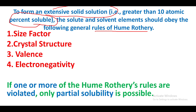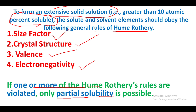For greater than 10 atomic percent solubility, the solute and solvent must obey the Hume-Rothery rules. The four rules are: size factor, crystal structure, valence, and electronegativity. If any one of these rules is not obeyed, only partial solubility is possible — not a fully homogeneous material.